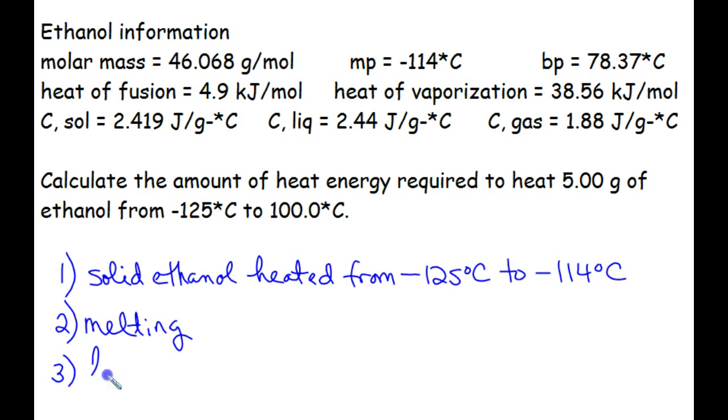Once we have melted, we are now a liquid. And we are still at the melting point because, remember, there is no temperature change during a phase change. So we're going to pick back up from negative 114 degrees Celsius, and then we're going to keep heating until we hit the temperature for our next phase change, which would be boiling. So we're going to heat it to 78.37 degrees Celsius.